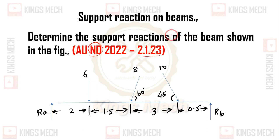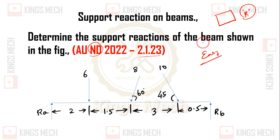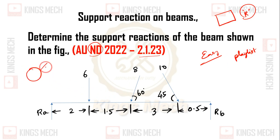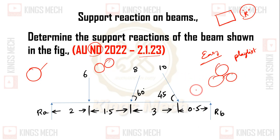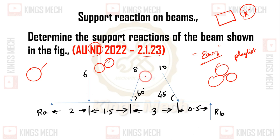It is a very easy problem they have given. Support reaction problems are: single roller problem, double roller problem, triple roller problem. We need to check about the positive stance as well as negative stance. We are going to see the question now.